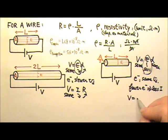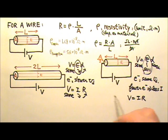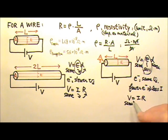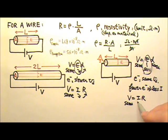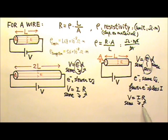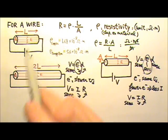By V equals IR, with the same voltage for both wires, the thinner wire has fewer electrons at the same speed, meaning less current. Therefore, the thinner wire must have bigger resistance.